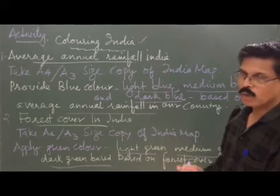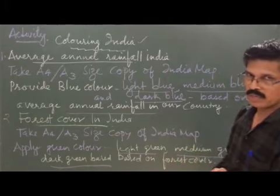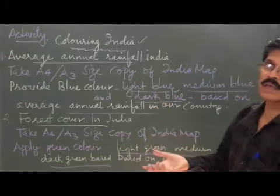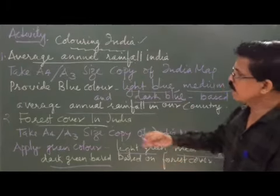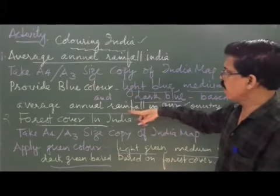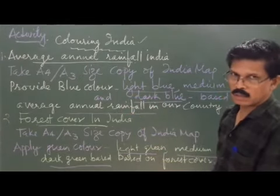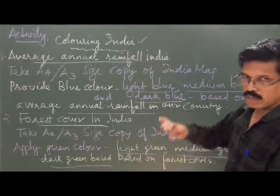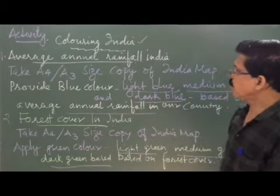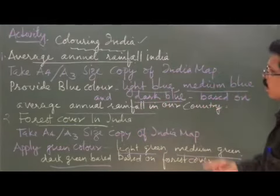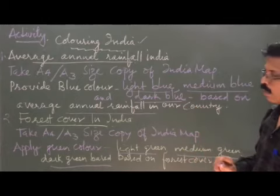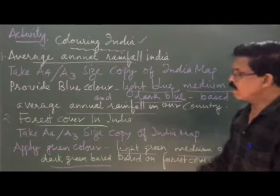To summarize: take two empty copies of the map of India — A3 or A4 size. Download or print from the internet, buy from a shop, or use the copy I am sending. For the first map, find the annual rainfall data. Give light blue for below-average rainfall, medium blue for medium rainfall, and dark blue for above-average rainfall. Label each area.